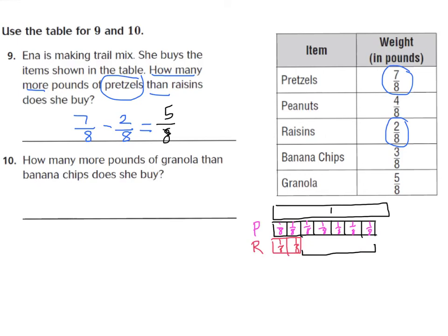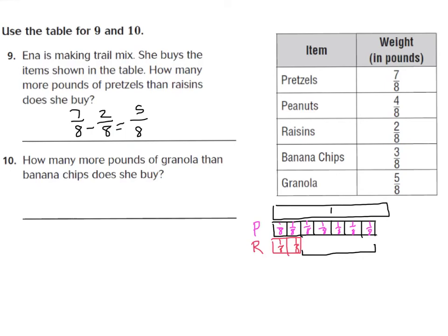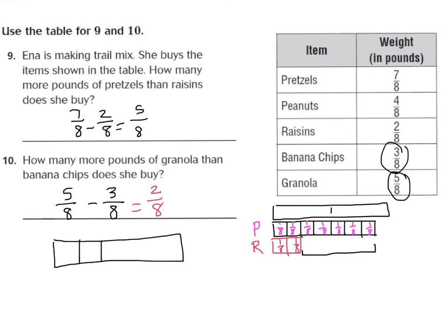For the last question, it says how many more pounds of granola than banana chips does she buy? Granola is five-eighths and banana chips is three-eighths. Because we want to know 'how many more than,' we subtract, always putting the larger fraction first. Five-eighths minus three-eighths equals two-eighths. You keep your denominator the same and subtract only the numerator. I'll quickly create five-eighths and remove three-eighths by crossing them out — and as you can see, two-eighths remain.